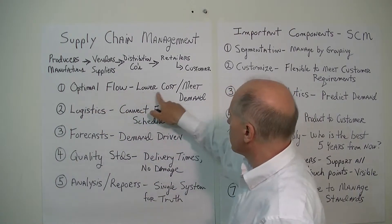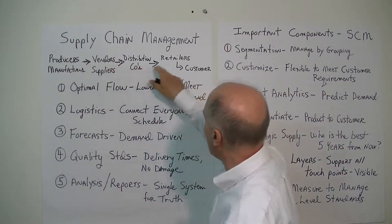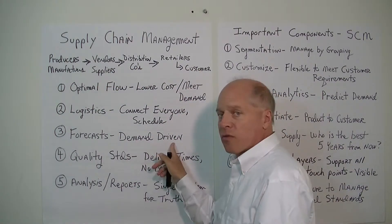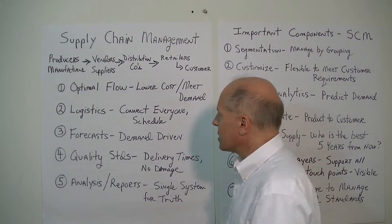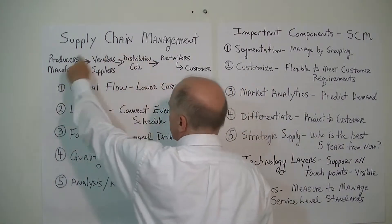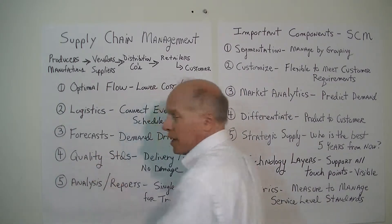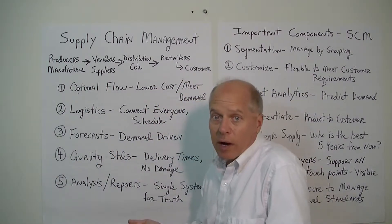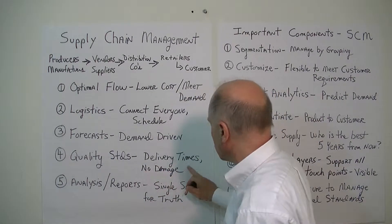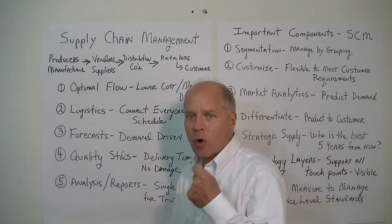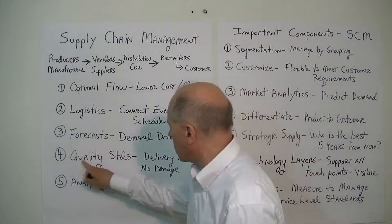We have to optimize the flow to lower the cost. Logistics has to be involved to move things between all the different players. It has to be demand-driven from forecasts — what does the demand show? That determines how much you should supply and move through the supply chain. On top of that, you have to superimpose quality standards and make sure it meets customer requirements, including delivery times. We don't want damaged goods; we want the customer to get what they ordered without returning it.